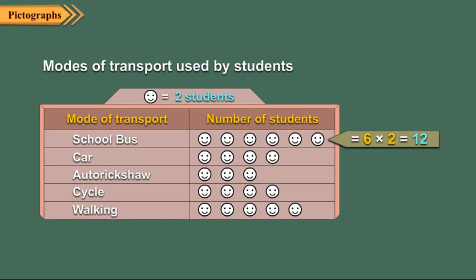Similarly, number of students using cars is equal to 4 into 2, which is equal to 8. Number of students using auto rickshaw is equal to 3 into 2, which is equal to 6.